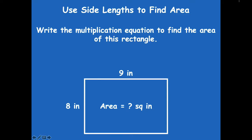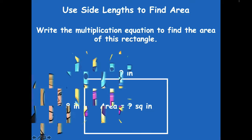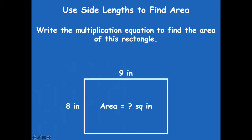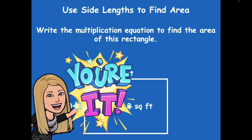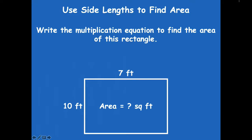Let's do one more. Write the multiplication equation to find the area, solve, and then click play when you're ready to go over it together. Eight times nine equals 72 square inches. And one more — I thought this one was kind of an easy one because I love to multiply by ten. Ten times seven equals 70 square feet.